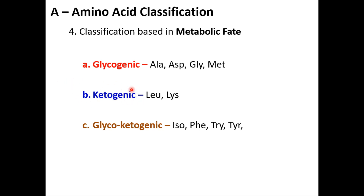For ketogenic amino acids, remember 'double L' — leucine and lysine. These two are purely ketogenic. Amino acids that are both glycogenic and ketogenic include: isoleucine, phenylalanine, tyrosine, and tryptophan. So metabolic fate classification gives us: purely glycogenic, purely ketogenic (leucine and lysine), and both glycogenic and ketogenic (isoleucine, phenylalanine, tyrosine, tryptophan).